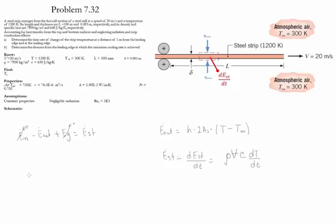Note that the volume is equal to delta times the cross-sectional area. Substituting all these values into this equation, we find that the change of temperature with respect to time is equal to negative 0.119 times the convection coefficient at position x.